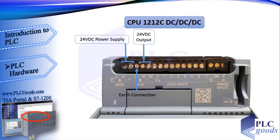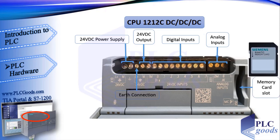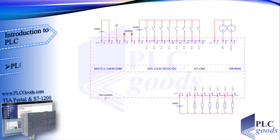Next, we have digital inputs. A digital input has only two states: on or off. The first terminal is common for all other eight digital inputs. These digital inputs are 24 volts and they need a supply. The last three terminals are for analog inputs. Analog sensors give us a signal such as 0 to 10 volt DC or 4 to 20 mA. Finally, a memory card may be needed, either as a transfer card or as a program card. Let's see some points of PLC wiring.